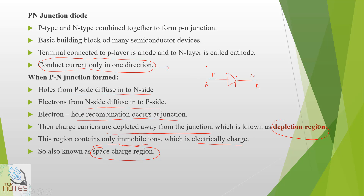We are going to combine P and N-type to form a PN junction diode. The junction region will be the depletion region. If you are interested, please share with your friends and subscribe. Thank you for watching.